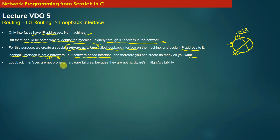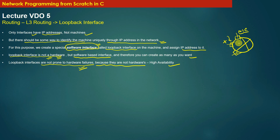Since loopback interfaces are software interfaces and not hardware interfaces, they are not prone to hardware failures. Anything that is not hardware will not wear and tear over time. Therefore, loopback interfaces possess the property of high availability — if a physical slot or interface on the router fails and goes down, the loopback interface remains up, since the probability of software failing is much less than hardware failing.